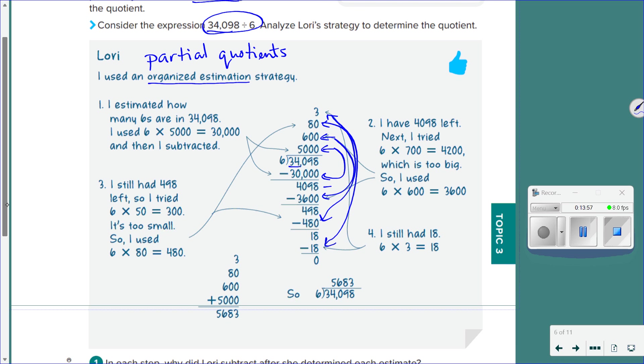So 380, 600, and 500 gave her 5,683. So, 6, 34,098 divided by 6 gives her 5,683. So, guys, I'll be honest. To me, this is just a more difficult way to look at long division. Because if I look at this, what did she really do? Long division.